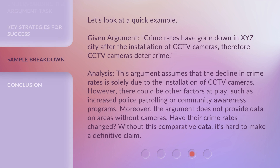Let's look at a quick example. Given argument: Crime rates have gone down in XYZ City after the installation of CCTV cameras. Therefore, CCTV cameras deter crime. Analysis: This argument assumes that the decline in crime rates is solely due to the installation of CCTV cameras. However, there could be other factors at play, such as increased police patrolling or community awareness programs. Moreover, the argument does not provide data on areas without cameras. Have their crime rates changed? Without this comparative data, it's hard to make a definitive claim.